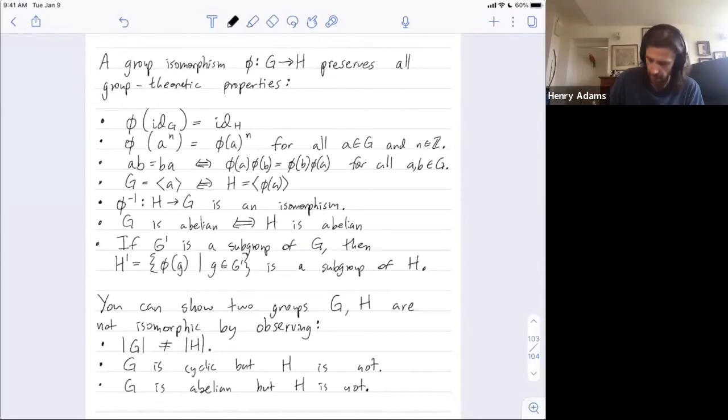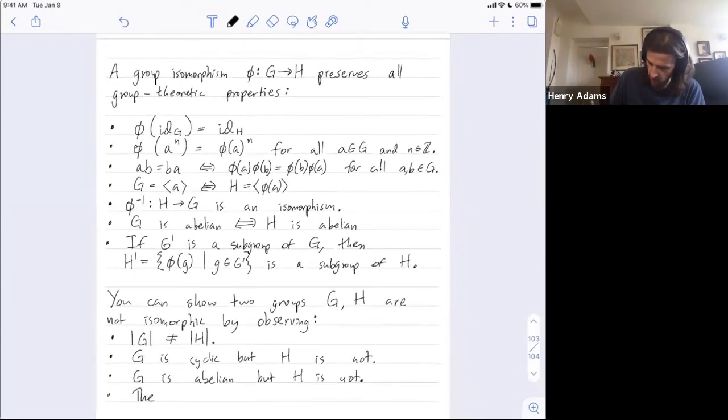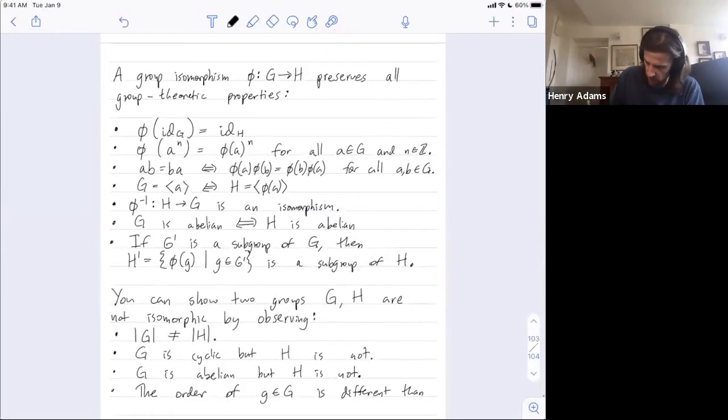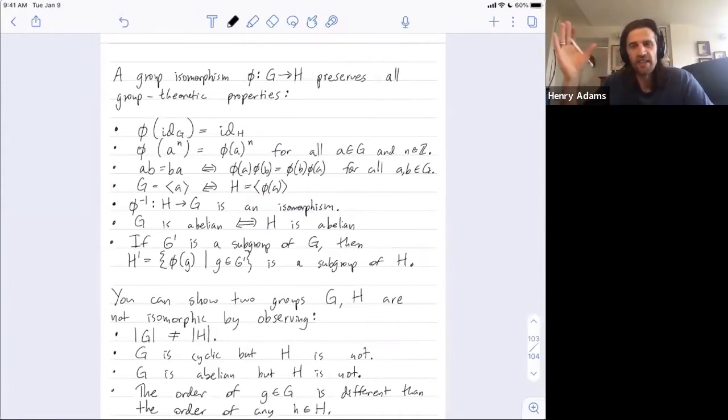Maybe the order of some element in a group G - so remember the order is how many times you have to add that element to itself until you get to the identity - is different than the order of any element in H. If the groups don't have sort of matching orders for all of their elements - maybe one group has an element of order seven but the other group doesn't - then they're definitely not isomorphic groups.